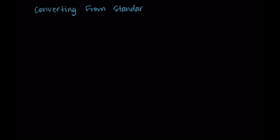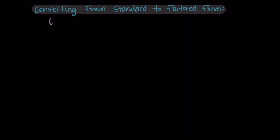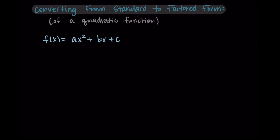Hi and welcome back. In this video we're going to talk about how to convert from standard form to factored form when we're looking at quadratic functions. We're starting with something in standard form, which might look like f of x equals ax squared plus bx plus c, and we want to write this in factored form: f of x equals a times x minus r times x minus s.